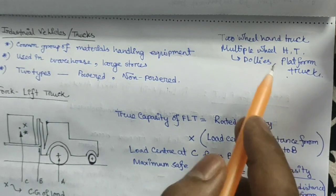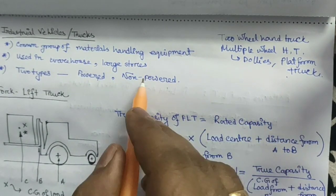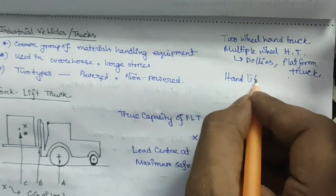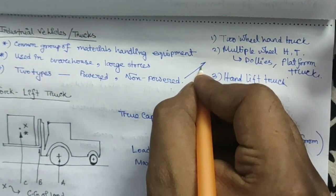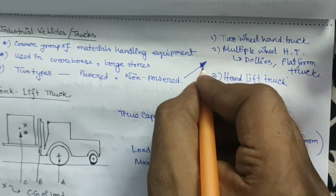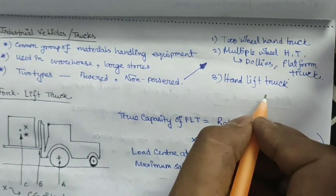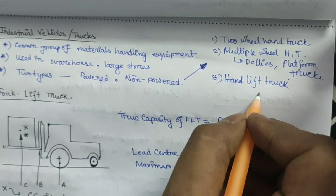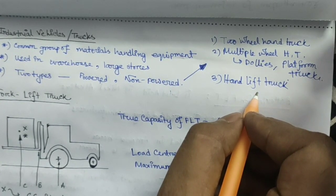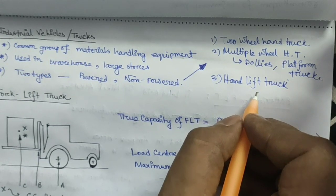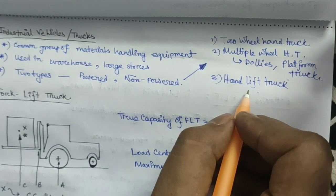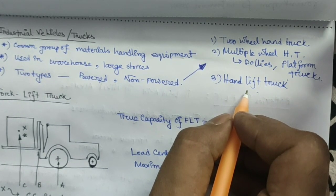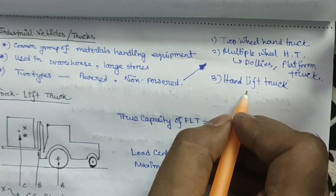The third subgroup is the hand lift truck. For hand lift trucks, there are different types of lifting mechanisms available: one is the hydraulic lifting mechanism and another is the mechanical lifting mechanism. Both hydraulic and mechanical mechanisms are further classified into three parts based on their geometric and constructional features, such as pallet truck, platform truck, or special type of truck.